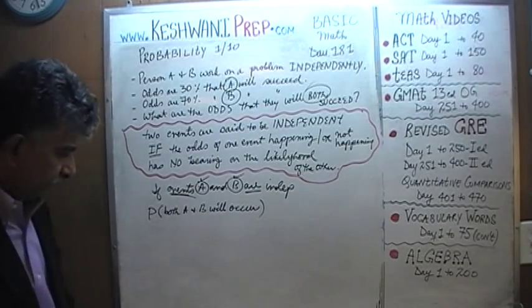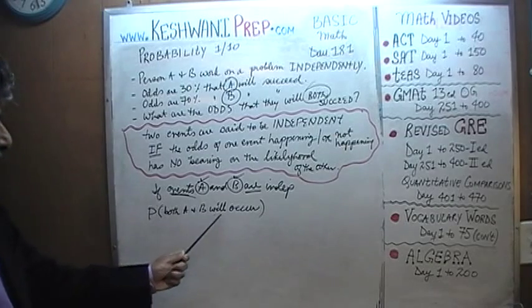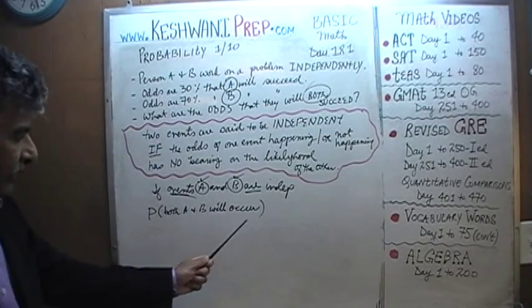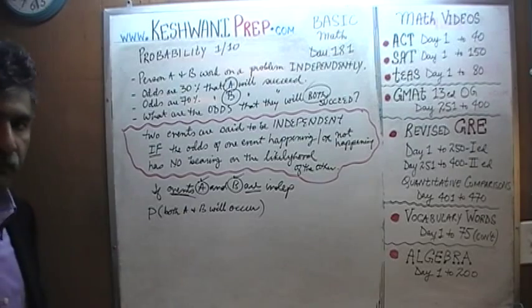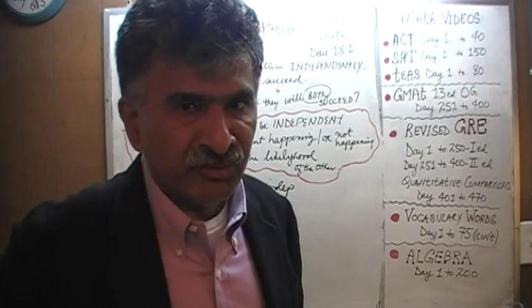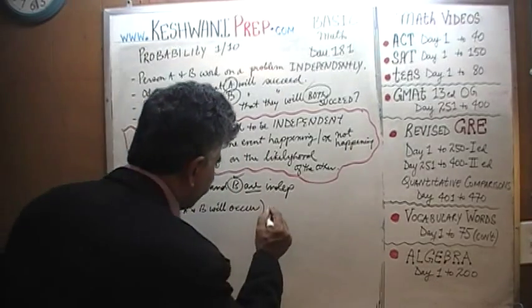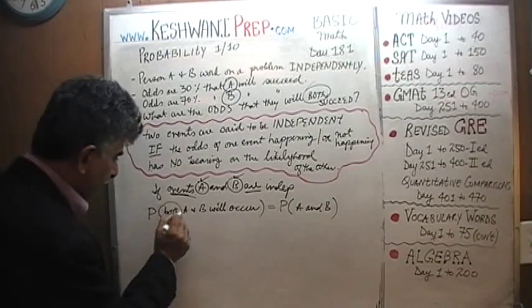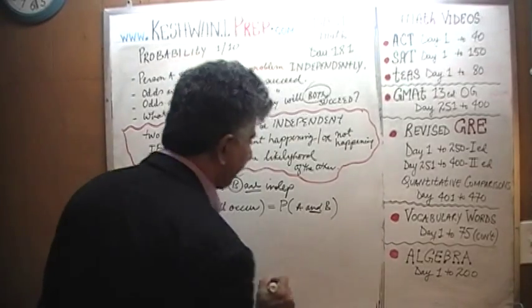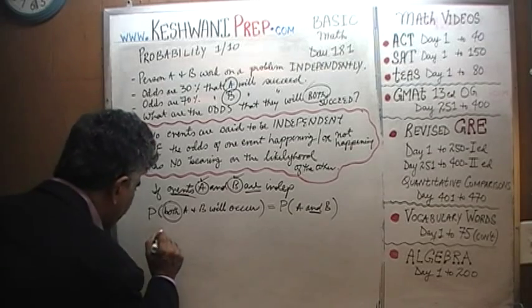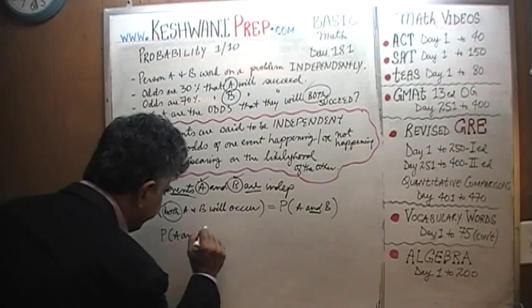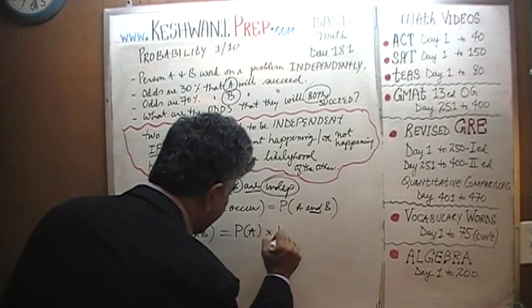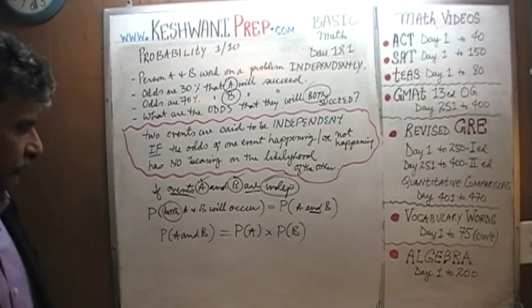The probability that both A and B will occur — typically in textbooks and on the exam, you will see it written as P(A and B). They leave out the word 'both' because it's understood. The odds of both A and B occurring, provided that they are independent, is simply the odds of A happening times the odds of B happening. That's all — that's how simple it is.